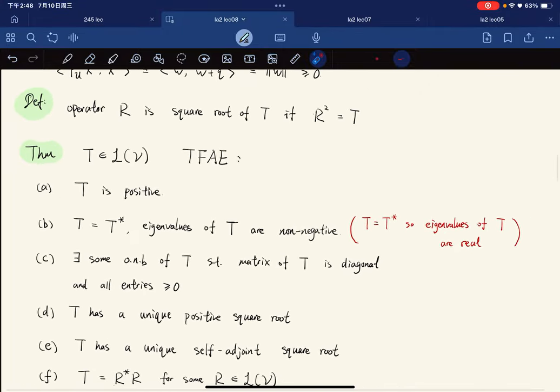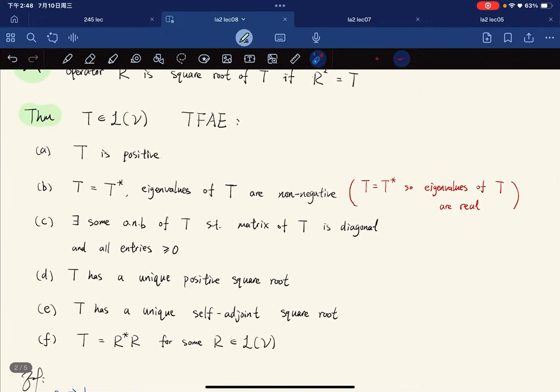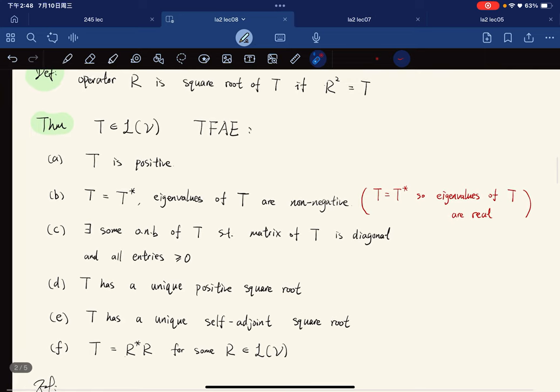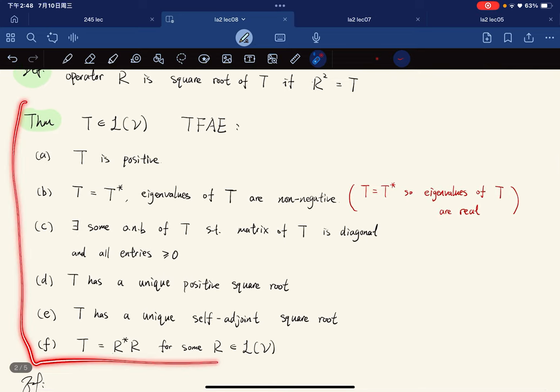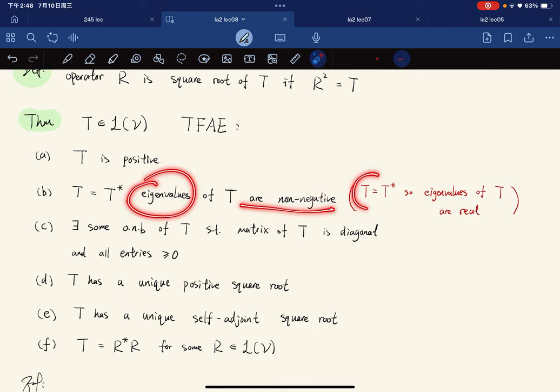Here we have a characterization of positive operators. So this is a list of it, and we're going to prove each of them. The eigenvalues of T are non-negative because self-adjoint operators have real eigenvalues.